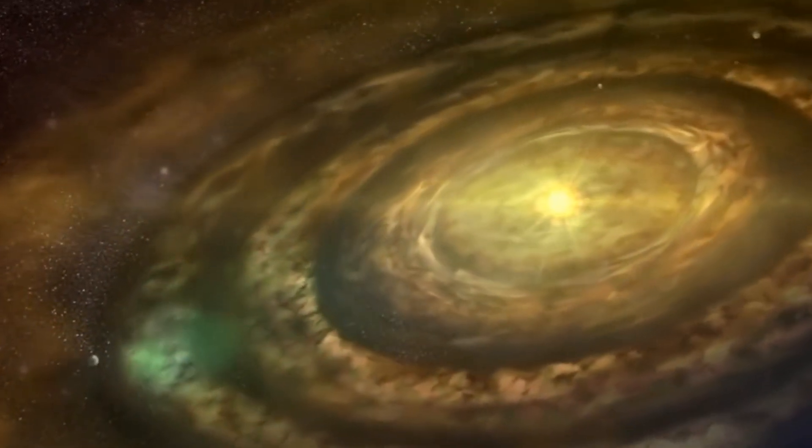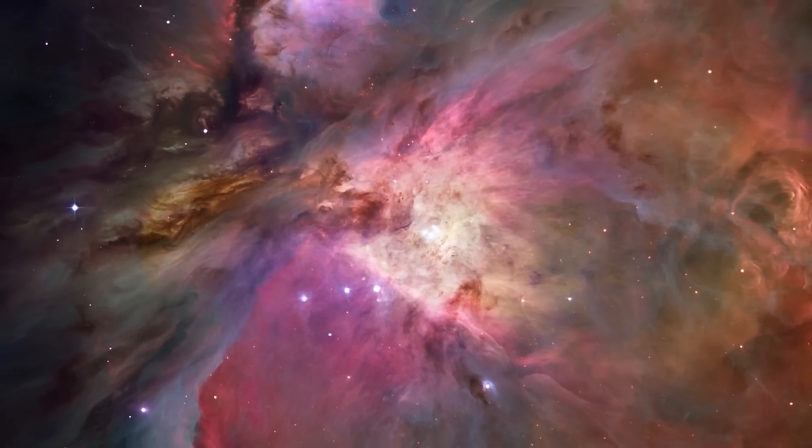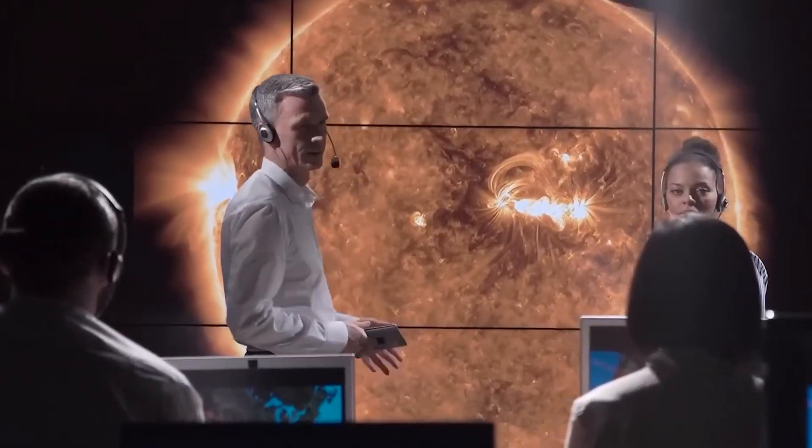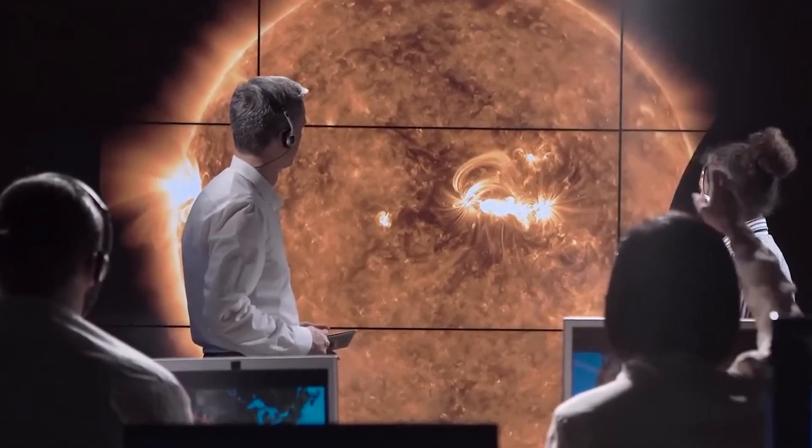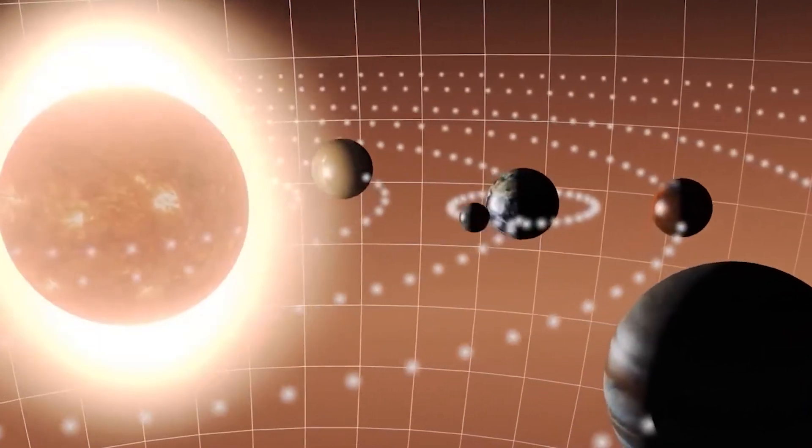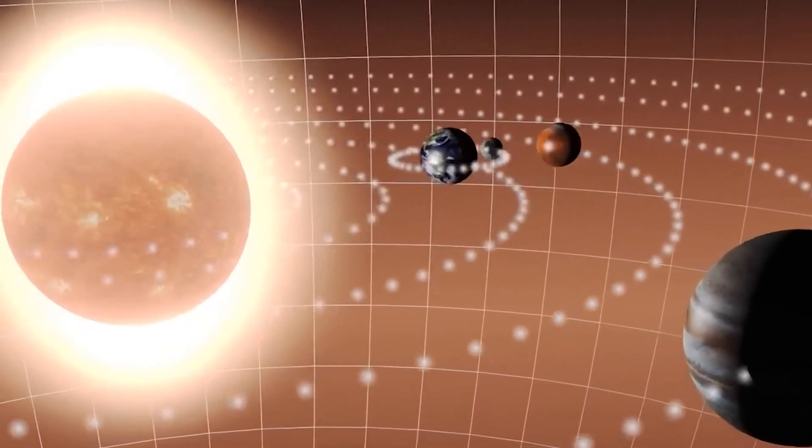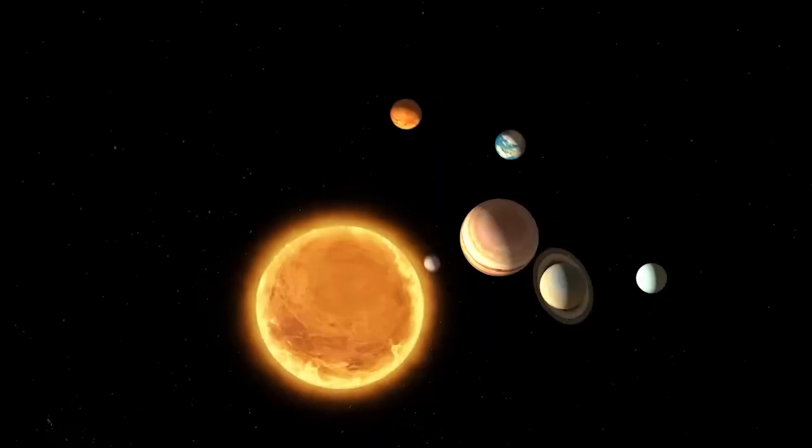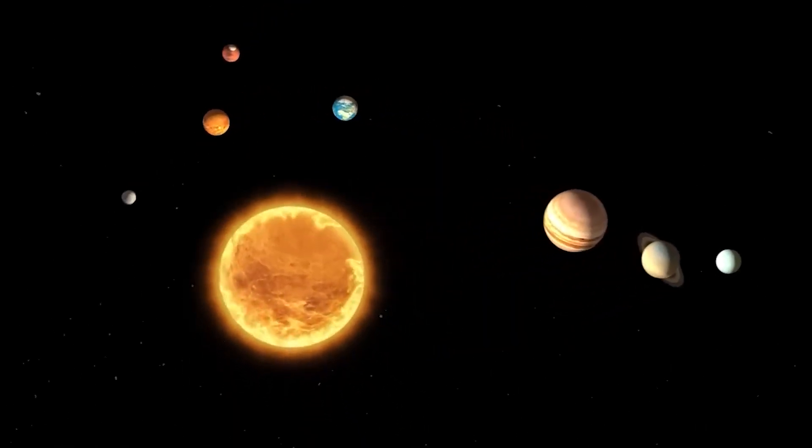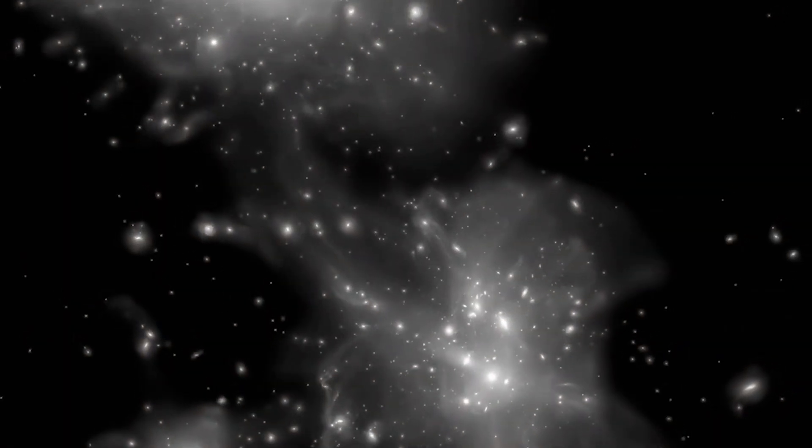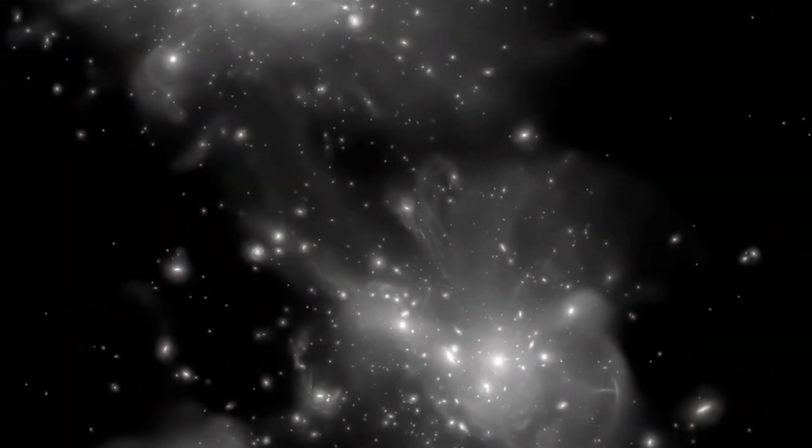But wait, there's more. Brace yourself for some cosmic mixology. Scientists have stumbled upon star systems that are nothing short of unconventional. Imagine a blend of gas giants and terrestrial planets mingling together in a celestial cocktail. Or, hold on tight, because in some star systems, the gas giants take center stage, while the terrestrial planets prefer the outskirts. Who knew star systems could be so diverse?